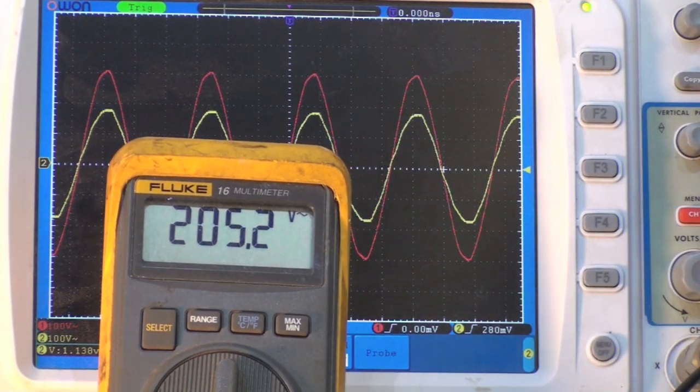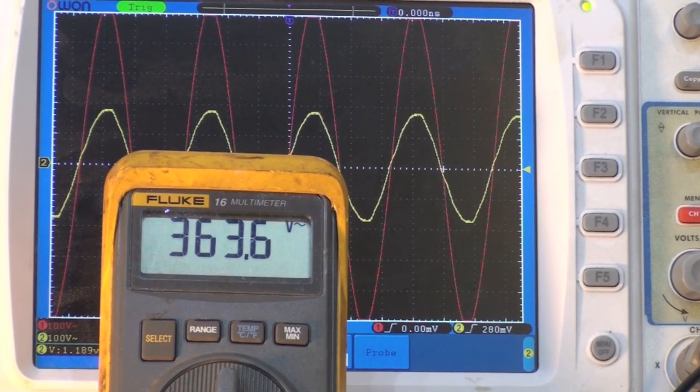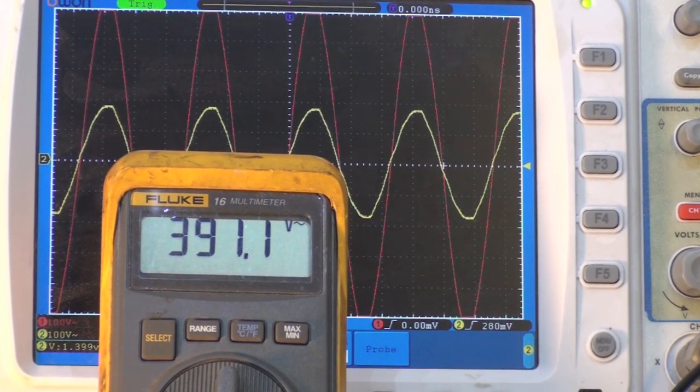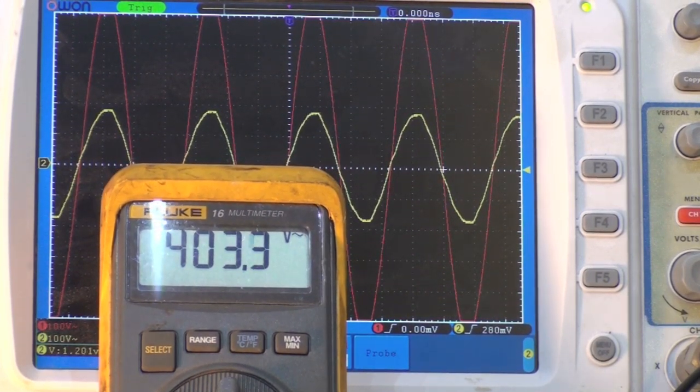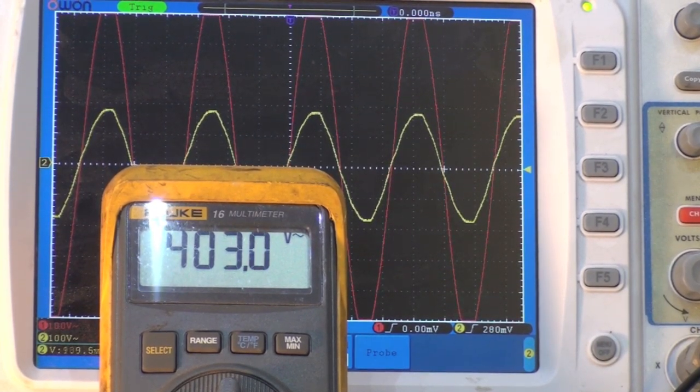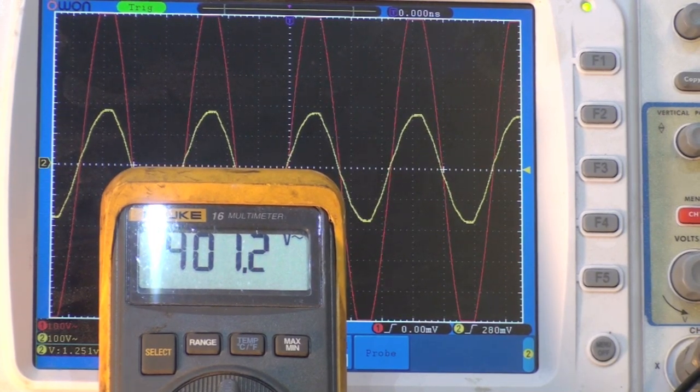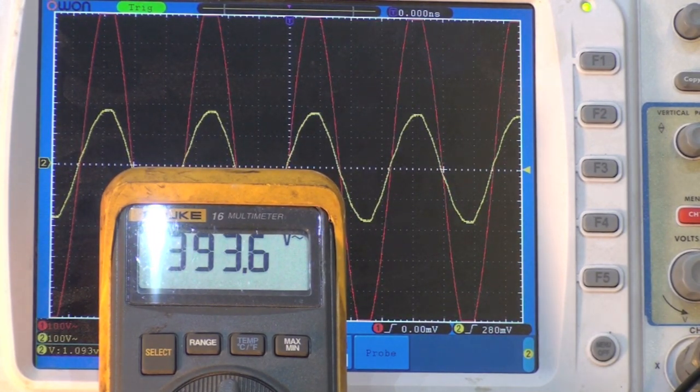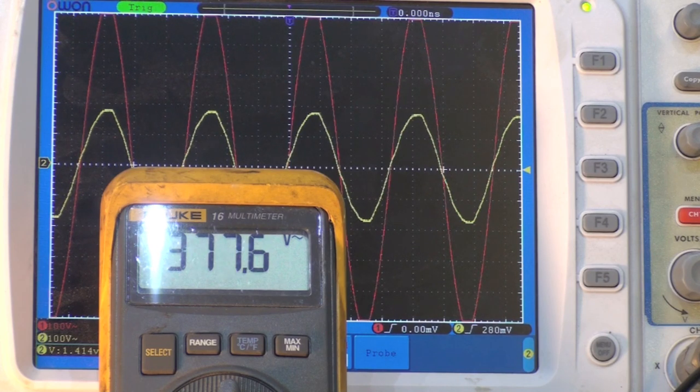Now I'm going to start blocking off the airflow. See, the more I block it off, the higher it goes. We're well past the 370 volts that the capacitor is supposed to take. So as I let it out again, it drops, mostly because the speed of the motor is increasing when I block it off.